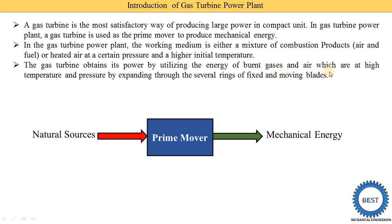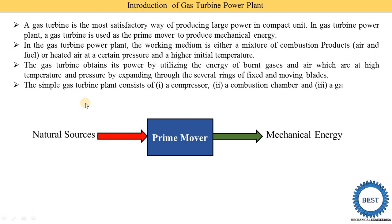The gas turbine obtains its power by utilizing the energy of burnt gases and air, which are at high temperature and pressure, by expanding through several rings of fixed and moving blades. There are 8 to 10 rows of blades, and the burnt gases pass through them. This heat energy is converted into mechanical energy through an isentropic expansion process — pressure is reduced and volume is increased — producing mechanical energy.